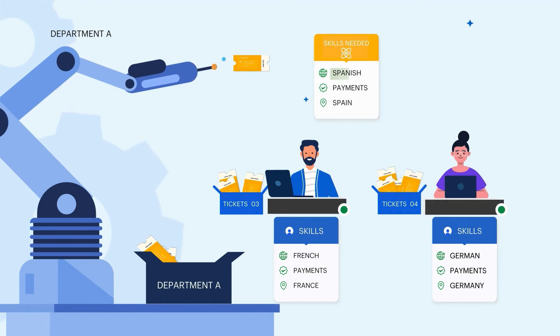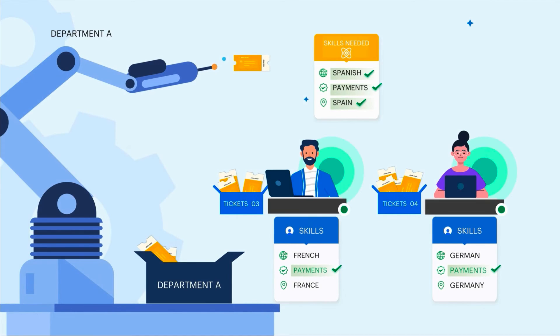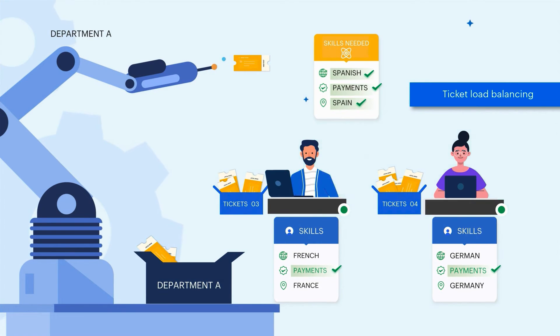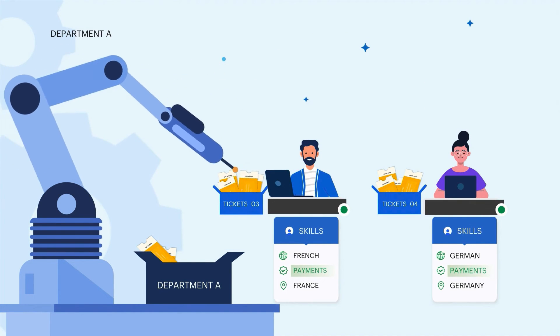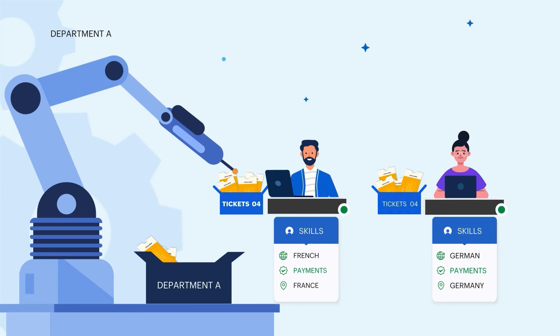What happens when two or more agents have the same number of skills that the ticket requires? This is where the load balancing algorithm comes into play — the ticket is assigned to the agent with the least number of tickets.